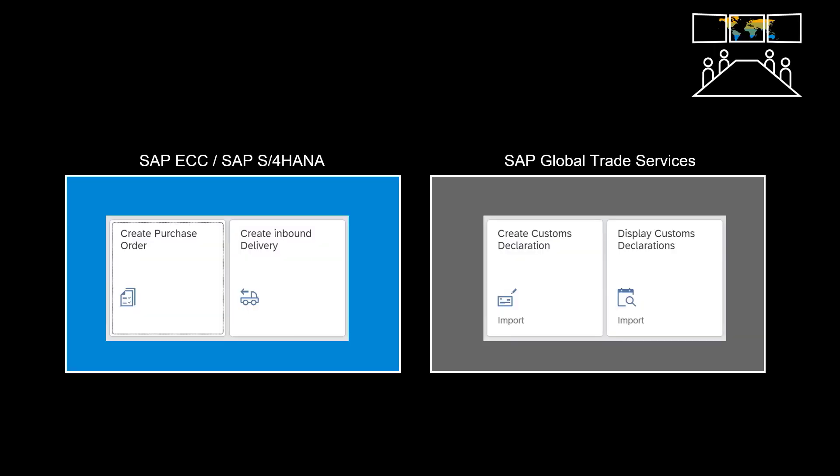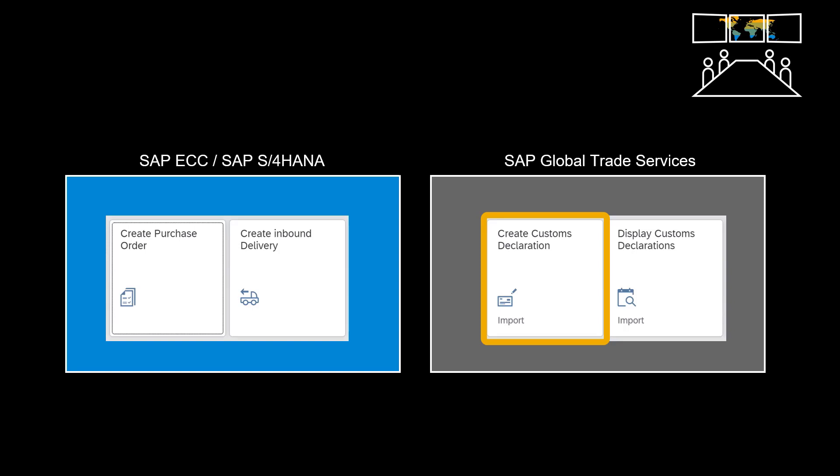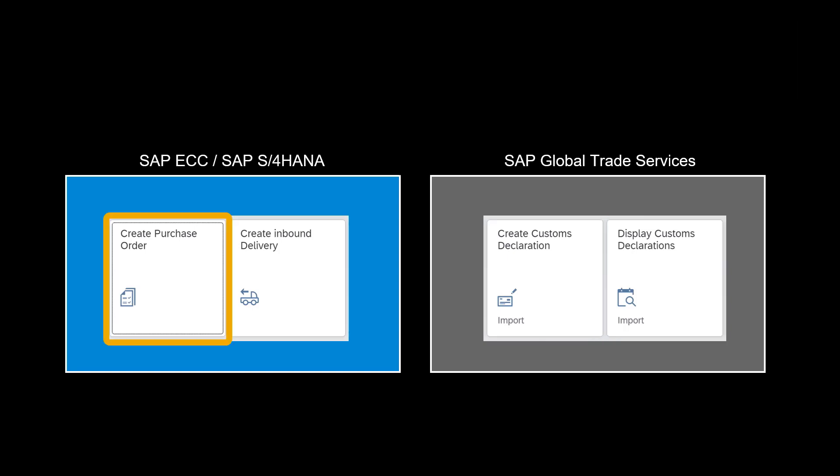We will use a number of apps. First, we will create a purchase order. Later, we will create the corresponding inbound delivery. Based on the inbound delivery, we will create a semi-automatic customs declaration before sending it to customs. We will end by looking at the response and release messages received back from the authorities. We will trigger the overall process by creating a purchase order. If you are just interested in the creation and filing of the actual import declaration, you may benefit from jumping a few minutes ahead.